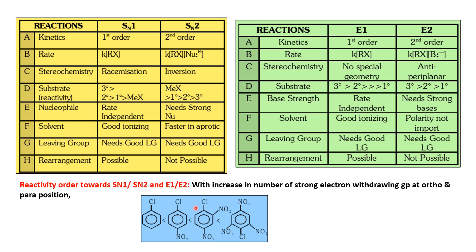For aromatic nucleophilic substitution, reactivity is influenced by strong electron-withdrawing groups such as the nitro group at ortho and para positions, which activate the ring toward nucleophilic attack. For example, para-chloronitrobenzene is more reactive than chlorobenzene.